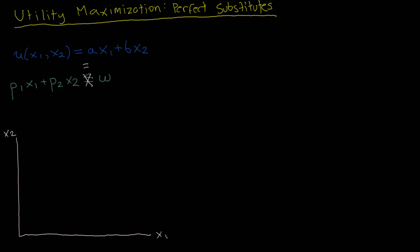There's another important thing to note regarding this utility function. Because this utility function is linear, it follows that the indifference curves will also be linear, which implies that the indifference curves will have a constant slope. That could be problematic because the budget line also has a constant slope, meaning we could have multiple cases to study for this utility maximization problem. Before diving into the different cases, I'm going to derive the slope of the indifference curves and the slope of the budget line.